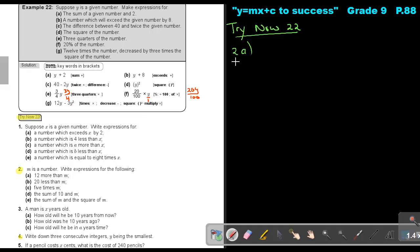Try now 22. Let's start with number 2. Number 2a. M is the number, so everything was in terms of M. Write the expression for the following. 12 more than M. More is just plus. So it's M plus 12. Number b. 20 less than M. So it's M minus 20. Number c. 5 times M. So it's actually 5 times M or 5M. Number d. The sum of 10 and M. So 10 plus M or M plus 10. It will both work out.